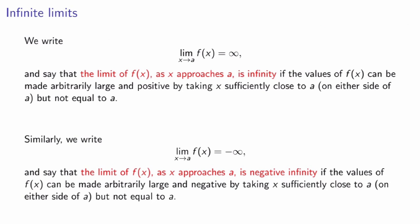So let me now define infinite limits mathematically. We write that the limit of f as x approaches a is infinity if the values of f can be made arbitrarily large and positive by taking x sufficiently close to a, on either side of a but not equal to a. Similarly, the limit of f as x approaches a is negative infinity if the values of f can be made arbitrarily large but negative. This is for full limits, but we can also define one-sided limits appropriately, as in the previous example.